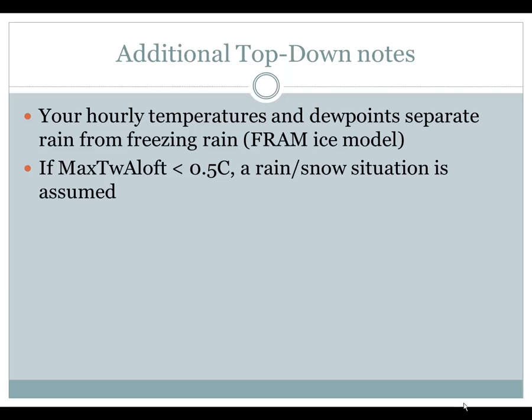Secondly, if the Max Wet Bulb Aloft is less than half a degree Celsius, it is assumed to be a rain-snow situation, so you will not see any sleet or freezing rain grids pop up if those Max Wet Bulb Aloft grids sit at that value.